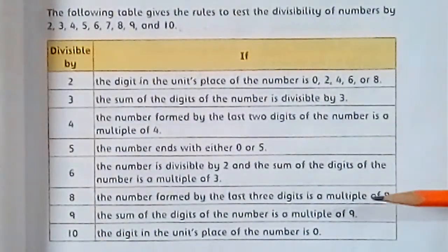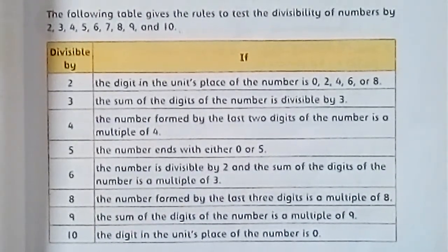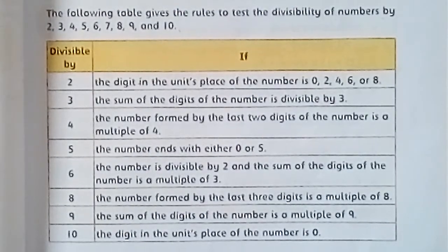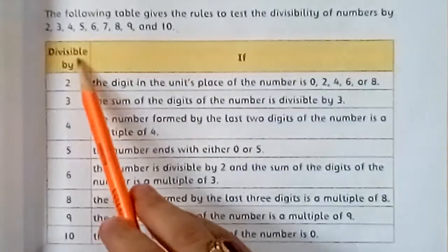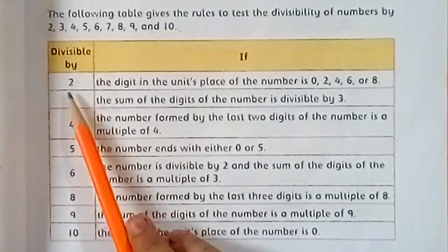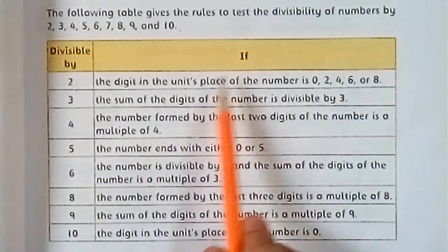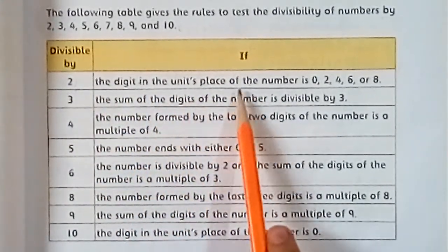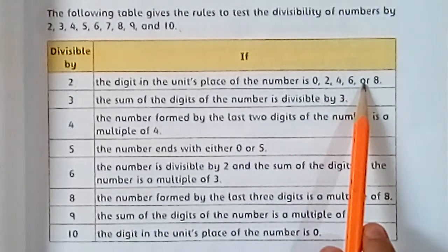You have a table in which we can test whether the given number is divisible by 2, 3, 5, 6, 7, 8, 9, and 10 or not. Divisible by 2: a number is divisible by 2 if the digit in the unit's place is 0, 2, 4, 6, or 8.